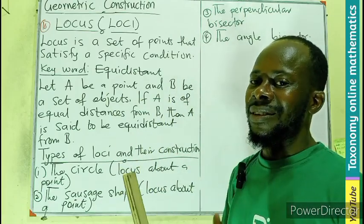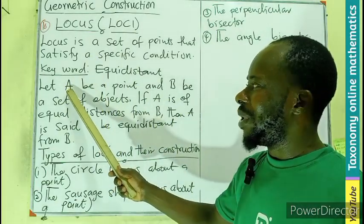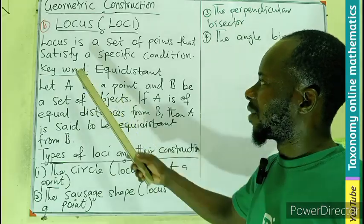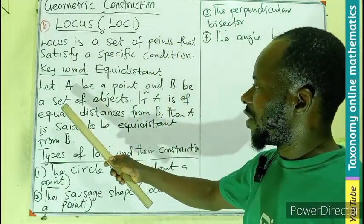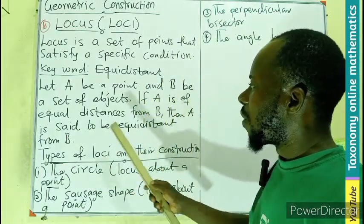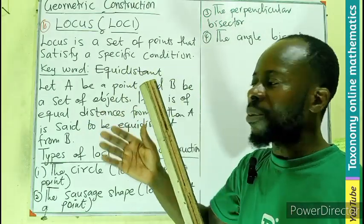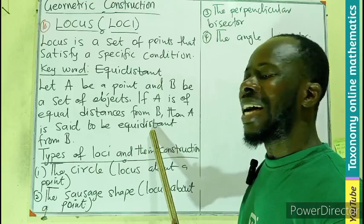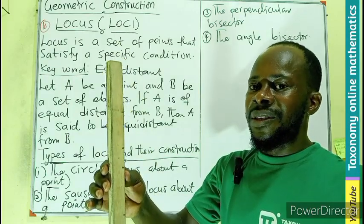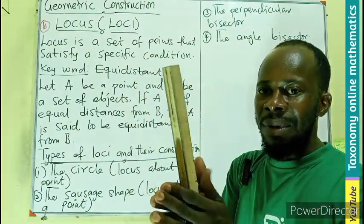We know distant, equidistance, halfway through. So if you want to explain the equidistance and we are letting A be a point, if A is a certain point and B is a set of objects or points, then we can say that if A is of an equal distance from B, then A is said to be equidistant from B. So equidistant, meaning if B is equidistant from C and A, then the distance between A and B and B and C should be the same, equidistant.